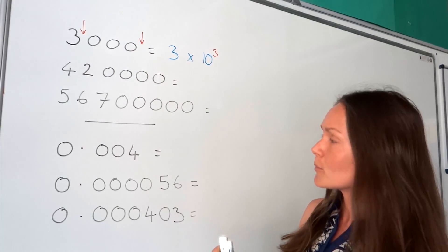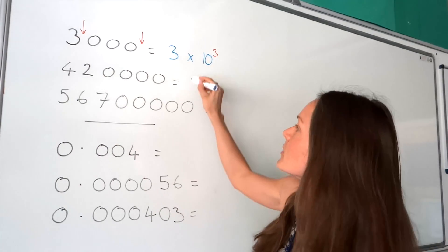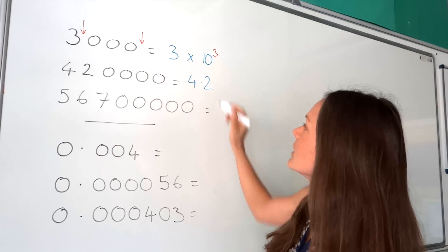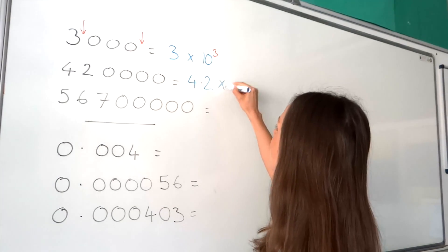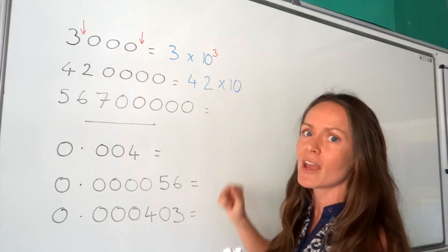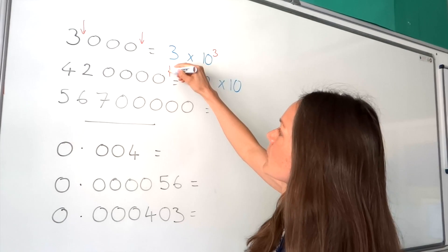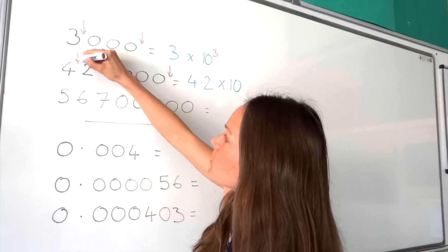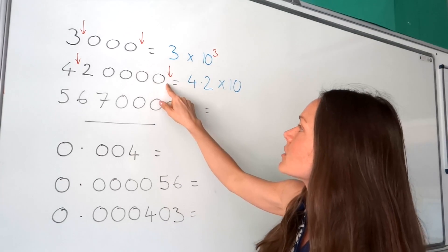In the next one, if we want to write this number between 1 and 10, this number here should be written as 4.2. Then remember, for standard form you always have to write times 10. So here I'm writing times 10. And then for the power, I need to check to see how many places the decimal has moved. So it used to be here and now it's in between the 4 and the 2 because we've got 4.2 here.